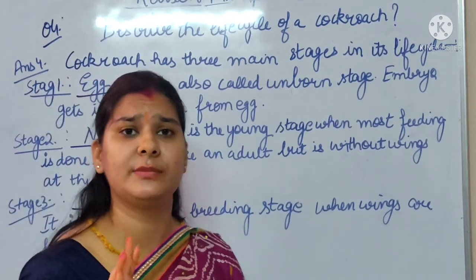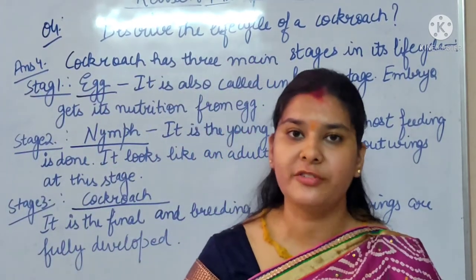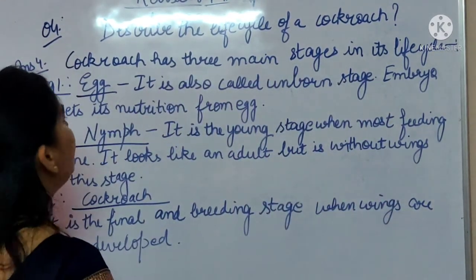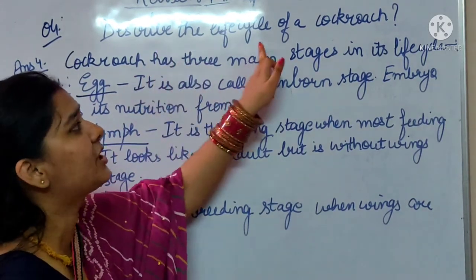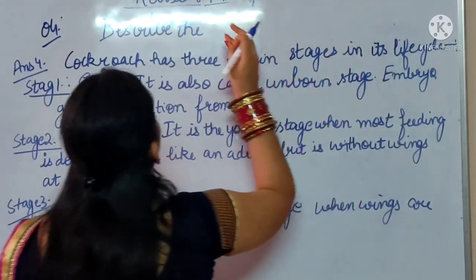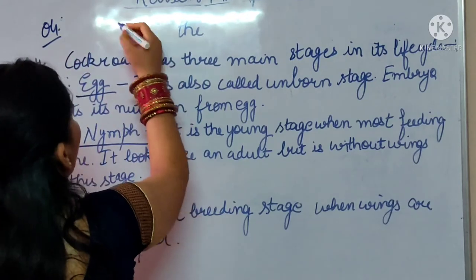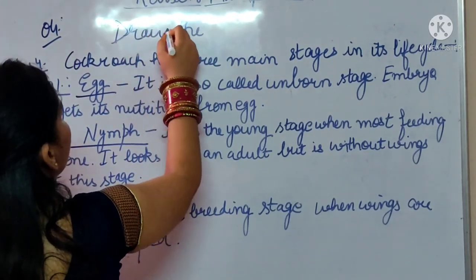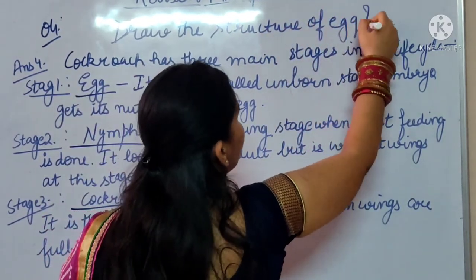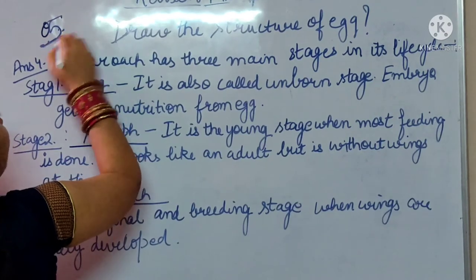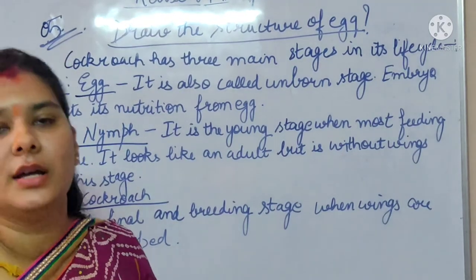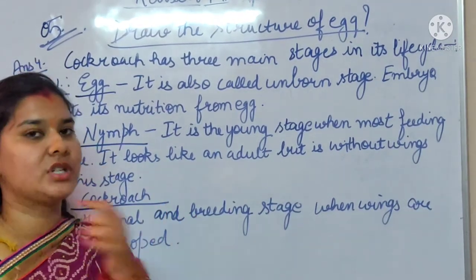Now, question number 5. You all must have drawn the structure of the egg also — that is your question number 5. You have to draw the structure of the egg. I have already drawn it previously. This is already done by you in your notebook. Those who have not done it can do it now in this revision assignment.